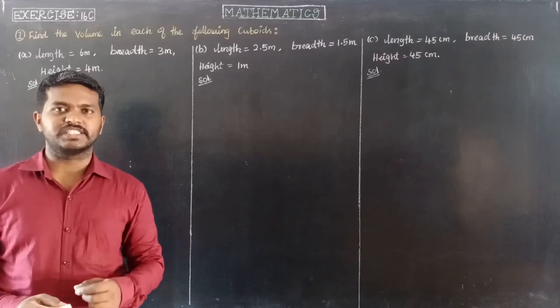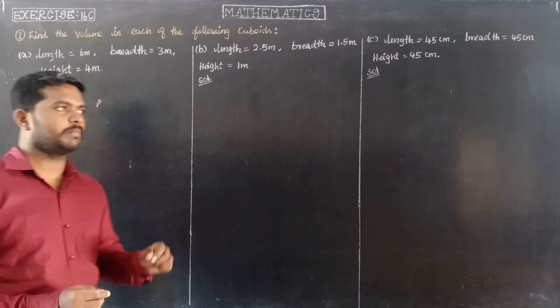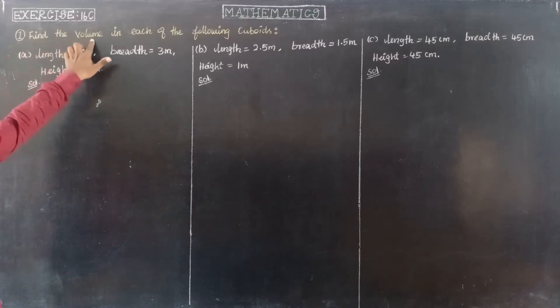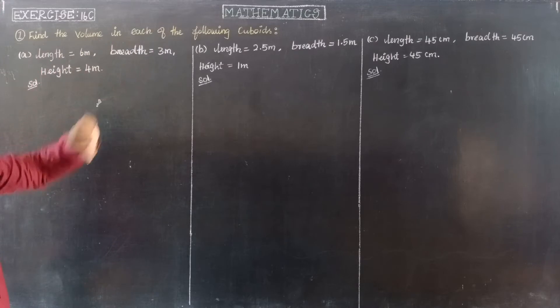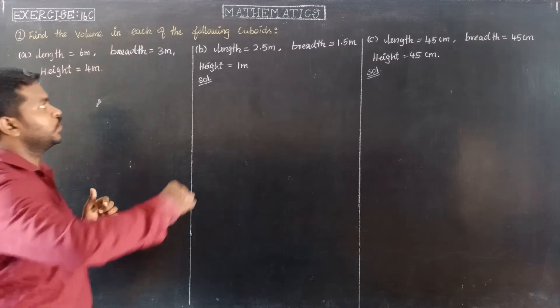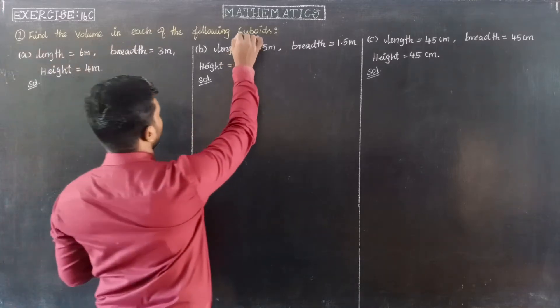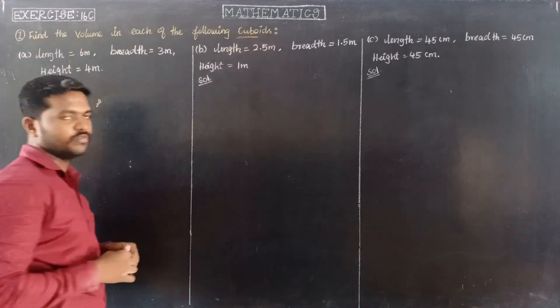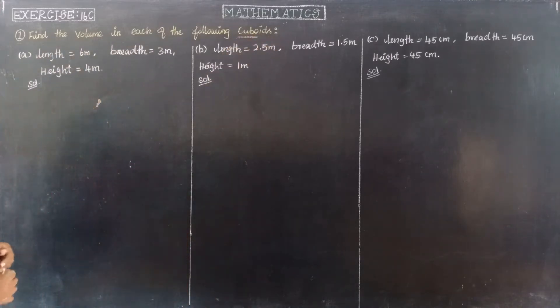First, next exercise 16C, question number 1. Find the value in each of the following cuboids. So, cuboid number, valiant and number.